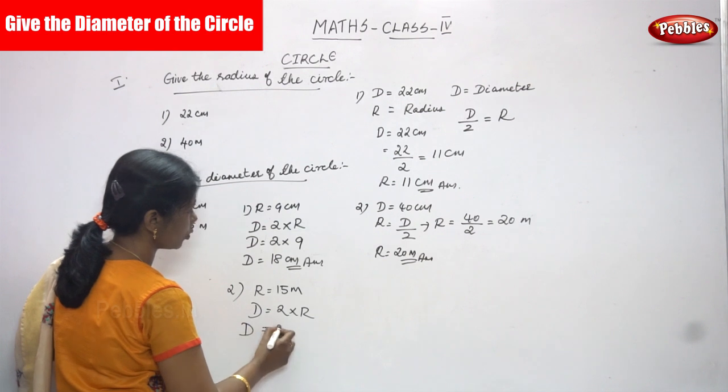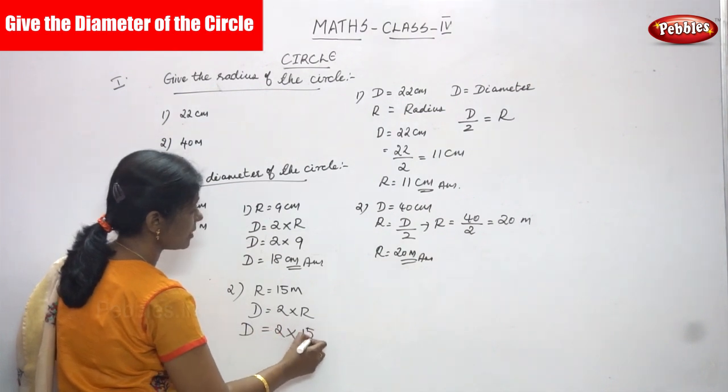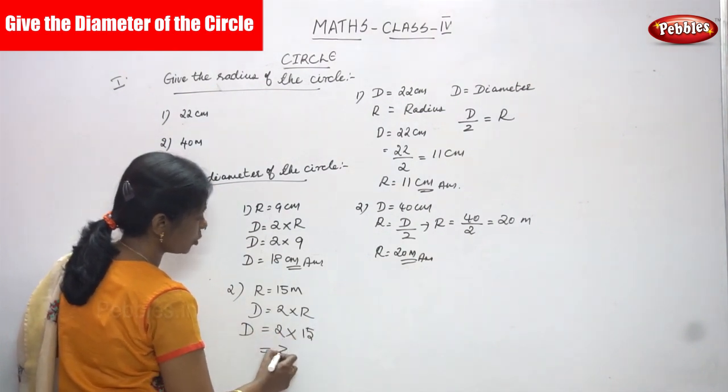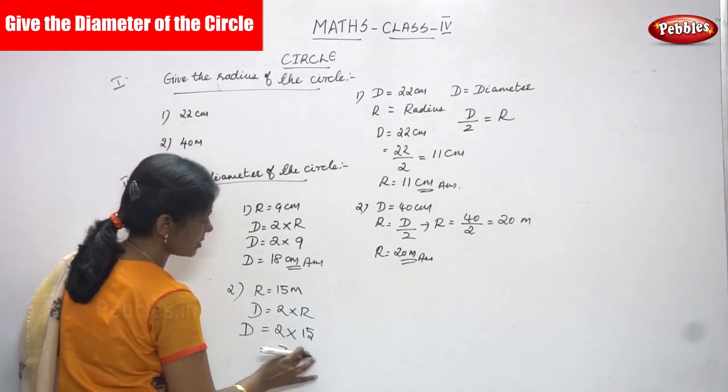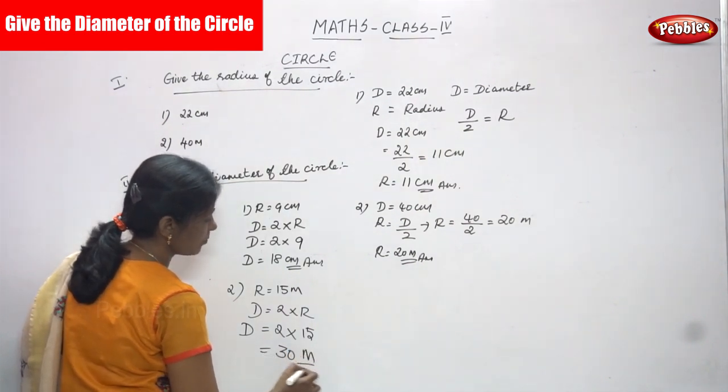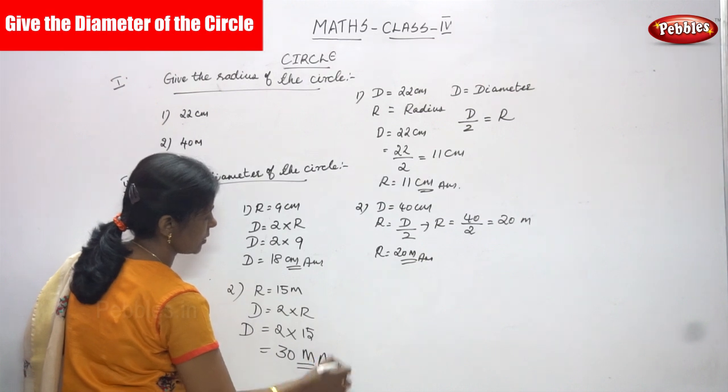You have to find out diameter, 2 into radius is equal to 15. So you have to multiply both, 2 into 15. You can get 30. That means the answer is 30 meter. This is the right answer for the question.